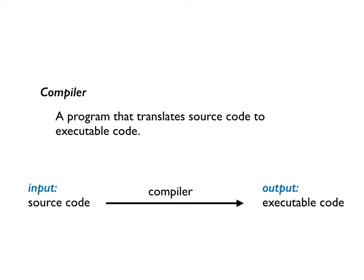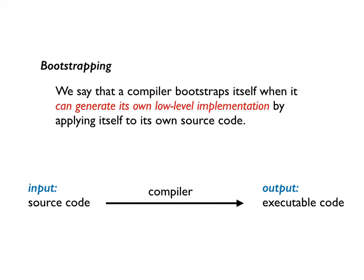A compiler is a program that transforms source code into executable code. Bootstrapping then? We say that a compiler bootstraps itself when it can generate its own low-level implementation by applying itself to its own source code.